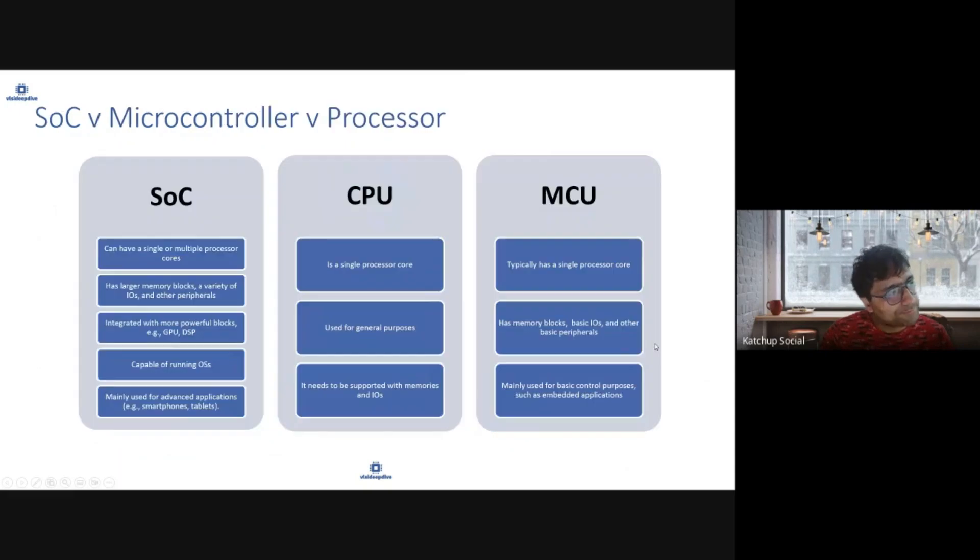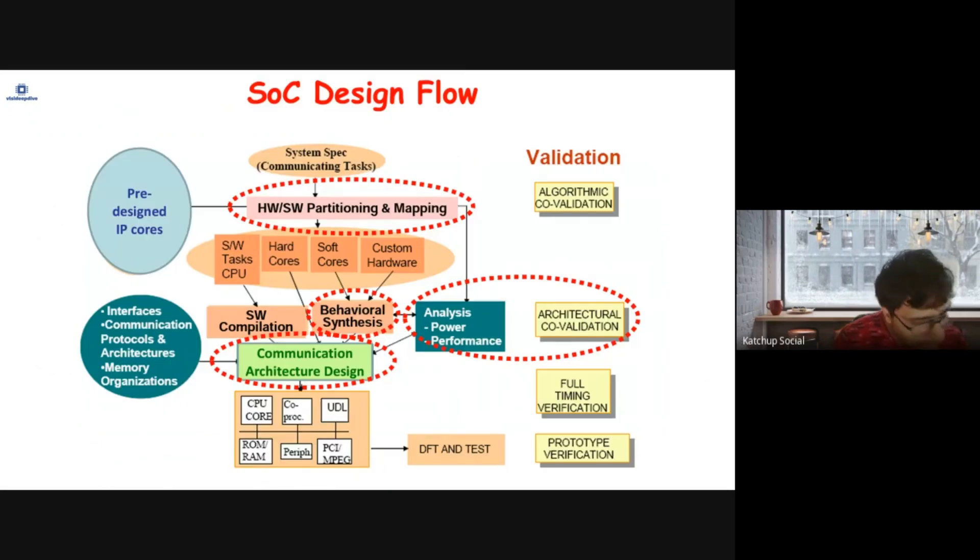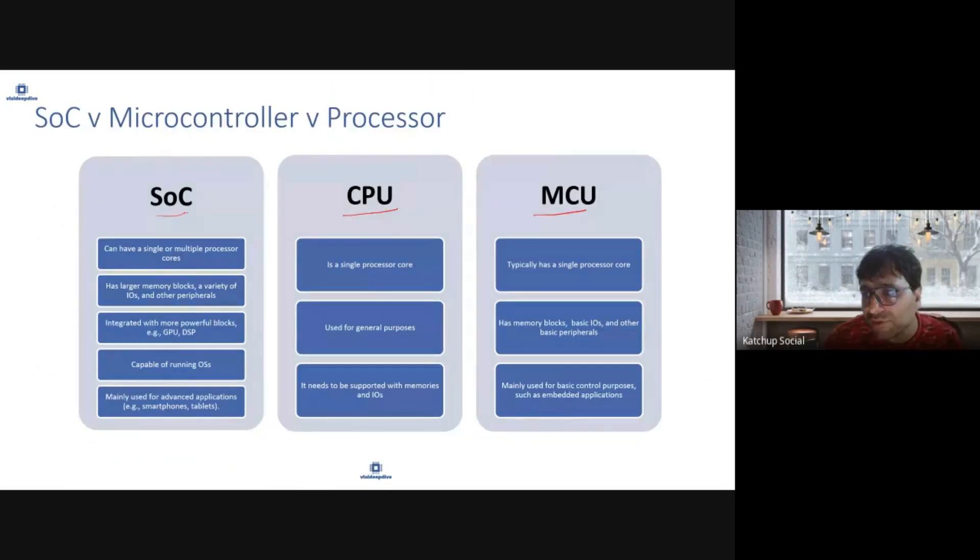Now to understand, it is important at this stage we understand what is the difference between an SoC, a CPU, and MCU, a microcontroller. These are all implemented on a single chip package but there are some differences. CPU typically is a single processor core. It's used for general purpose. You can use CPU to do multiplication. It's a general purpose processor. It needs support with memories and IOs. You need to connect to data, read in data, read out with memories and IOs.